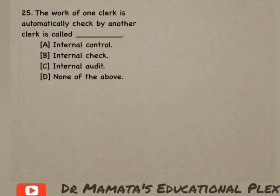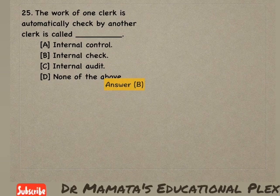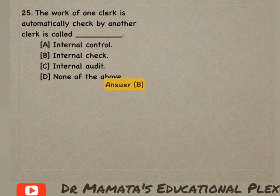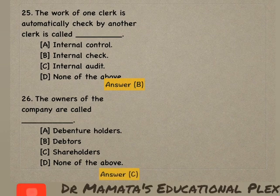Next question: The work of one clerk is automatically checked by another clerk — this is called internal check system. Jis mein ek person ka kaam automatically doosre person se check hota hai. So option B, internal check, is the correct answer. The owners of the company are called — debenture holders, debtors, shareholders, or none of the above? Shareholders jo hote hain woh company ke owners hote hain. So option C is the correct answer.